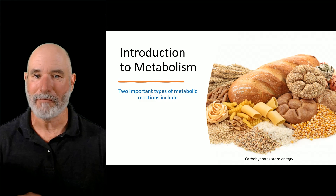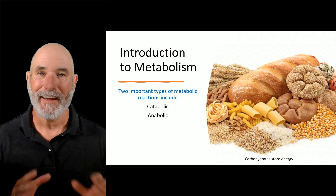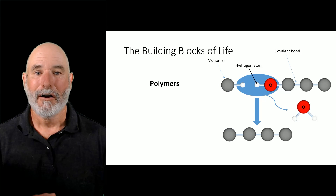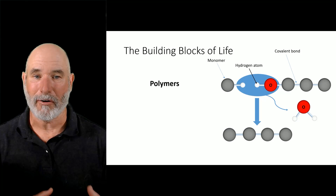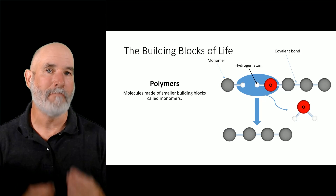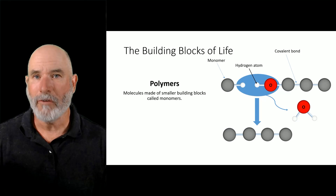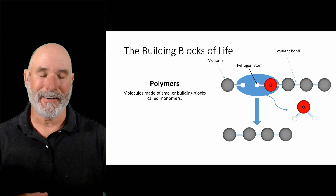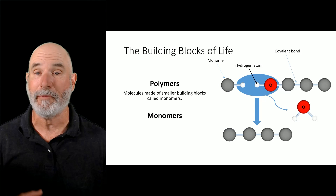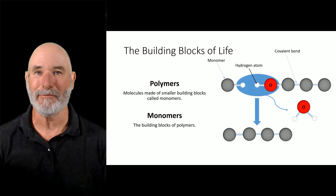Two important types of metabolic reactions are catabolic reactions and anabolic reactions. A polymer is basically a molecule made from smaller building blocks called monomers. One way to think of a polymer is like a train — the train is made up of individual cars, and the cars would be your monomers, which are the building blocks you put together to make the polymers.